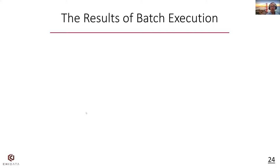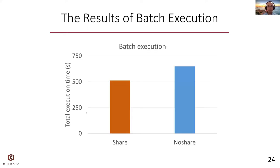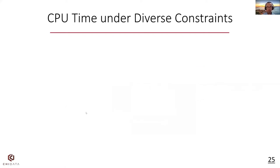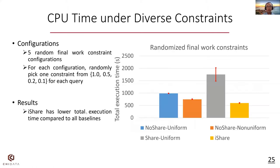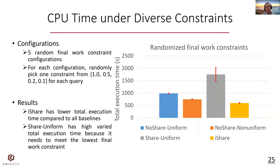Before we compare iShare with the baselines, let's first look at the total execution time of executing the shared plan in one batch versus executing the tested queries separately in one batch. We see that in this case the shared plan has the benefit of reducing redundant work across queries. However, if we consider the diverse constraints, the shared plan is not efficient anymore. We test five random final work constraint configurations, and for each configuration we randomly pick one from four final work constraints for each query. We see that iShare has lower total execution time compared to all baselines. Share Uniform has highly varied total execution time because it needs to meet the lowest latency goal, which is randomized by our configuration.